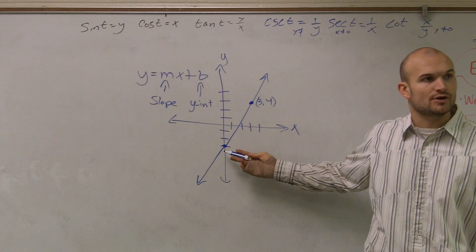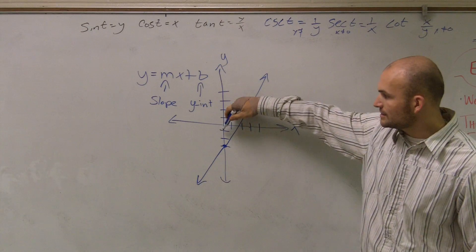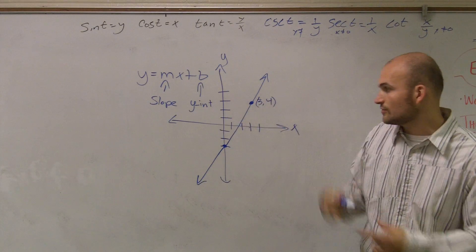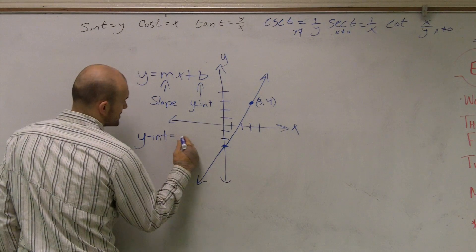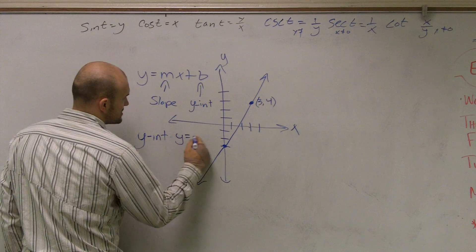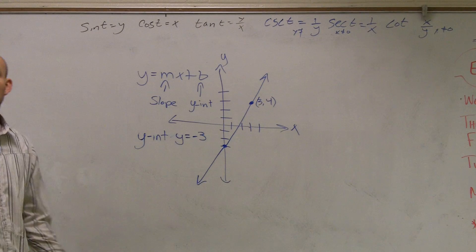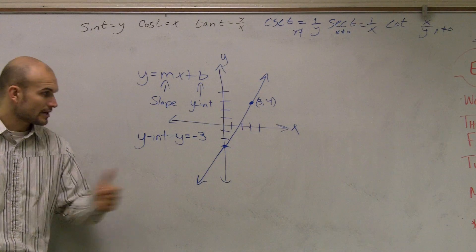What is my y value at that point? You say negative 1, negative 2, negative 3. So I can say the y-intercept is when y equals negative 3. Make sense?